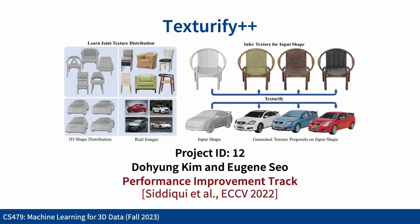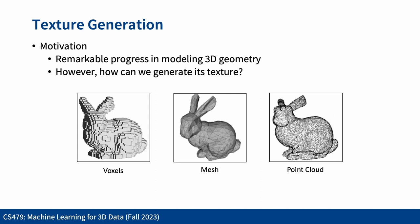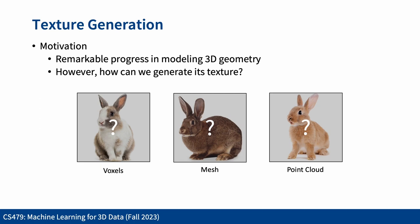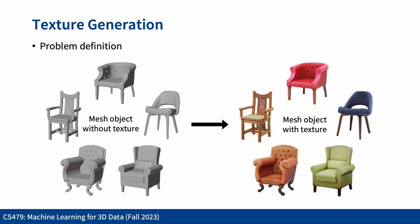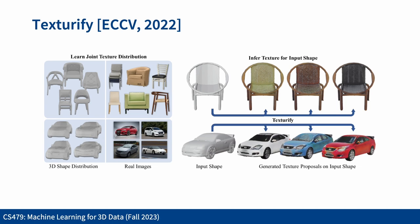Hello everyone, this is a pitch presentation of Texture5++ from Team 12. Recent years have seen remarkable progress in modeling 3D geometry. However, generating fully textured 3D objects remains a less-explored challenge. Our baseline paper is Texture5, a state-of-the-art model that generates random texture based on a given 3D mesh. The architecture is divided into encoder, decoder, and discriminator.